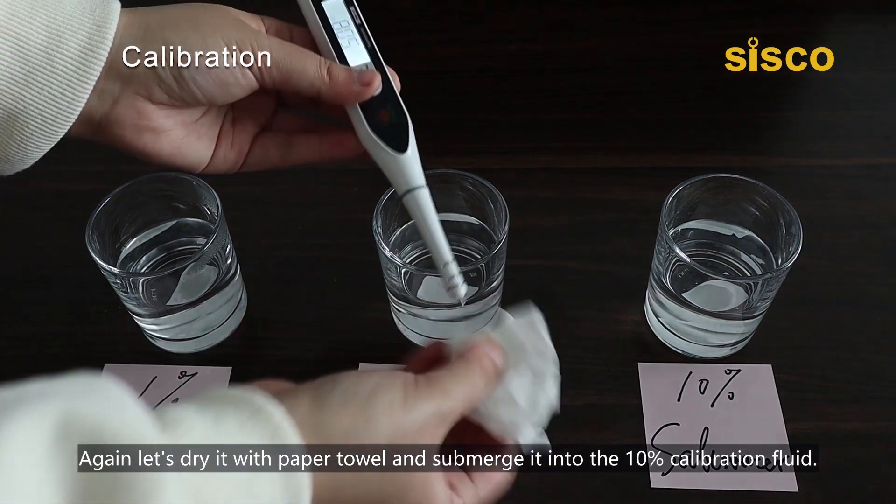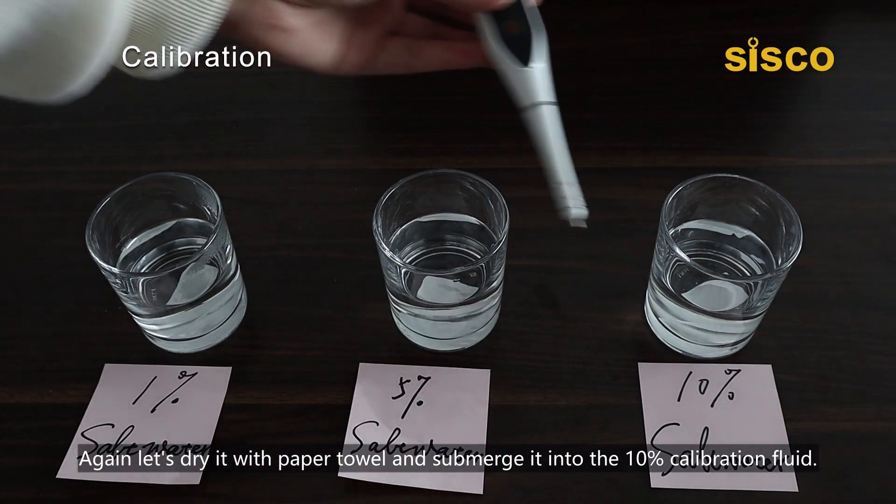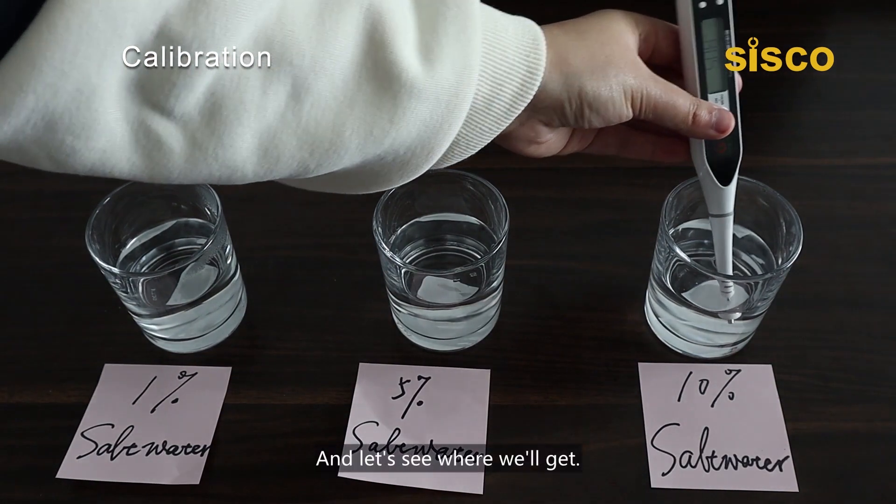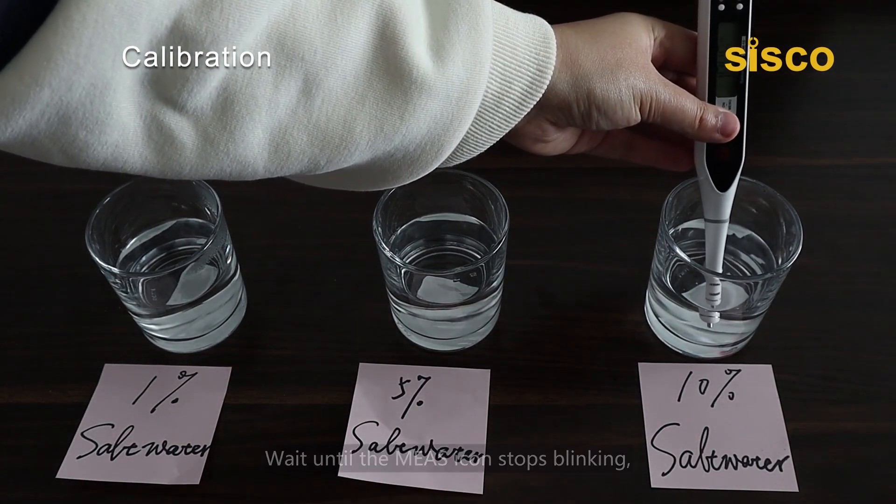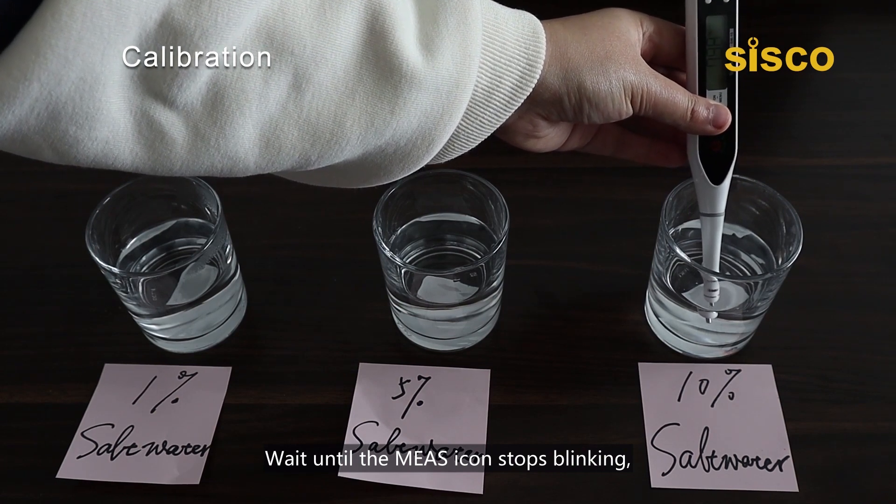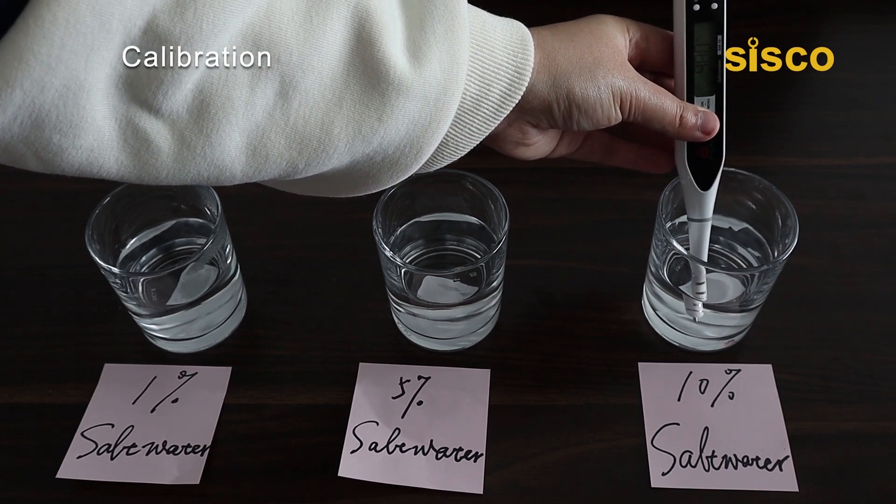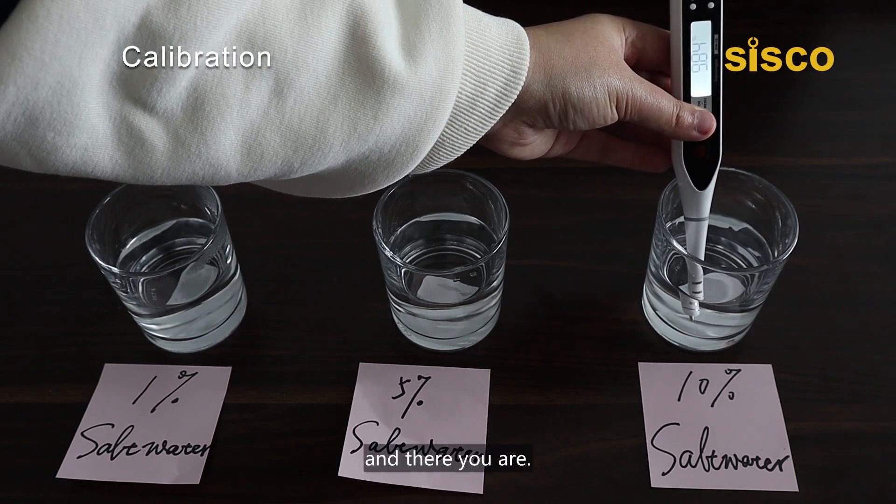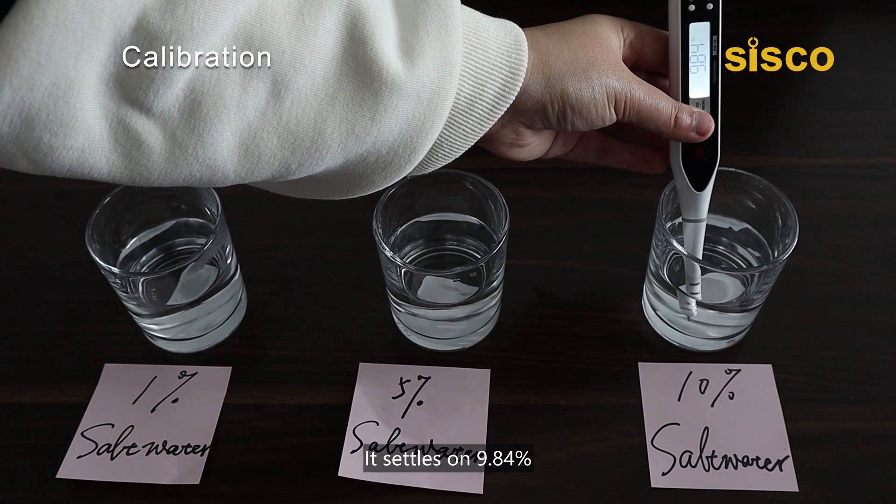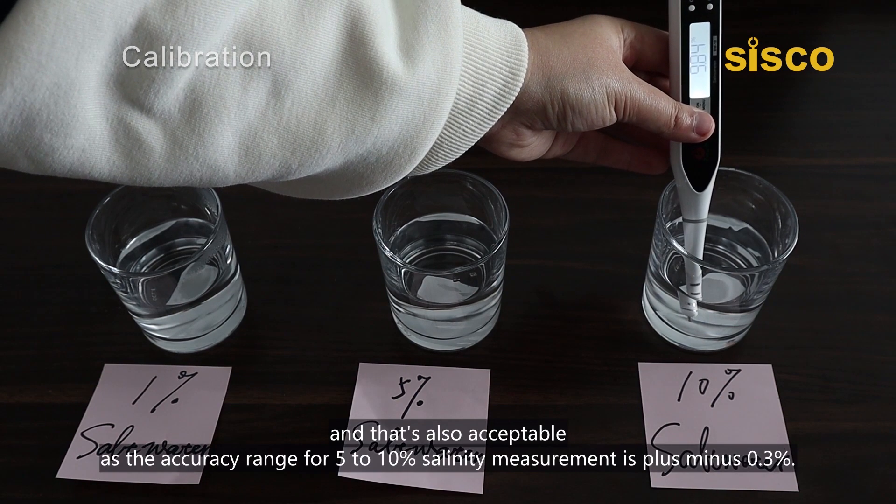Again, let's wipe it with paper towel and submerge it into the 10% calibration fluid, and let's see what we'll get. Wait until the MES icon stops blinking. And there you are. It settles on 9.84%, and that's also acceptable, as the accuracy range for 5-10% salinity measurement is ±0.3%.